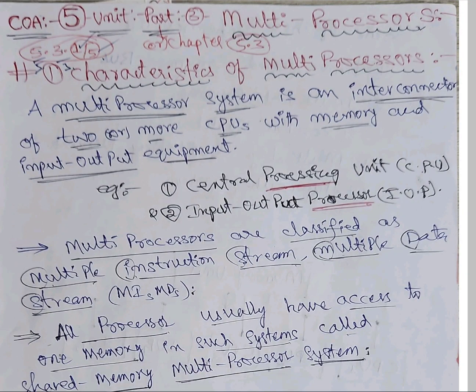Hi everybody, I am your Prasad. Now we are going to discuss multiprocessors — what is multiprocessor, define multiprocessor and its characteristics, how it works. You can ask any question. They can ask any question from JNTU. So this is the topic which I will explain. Fifth unit, Computer Organization and Architecture.